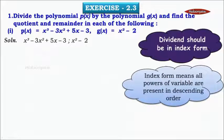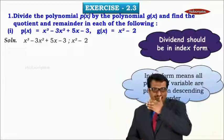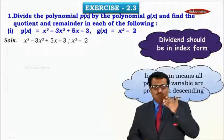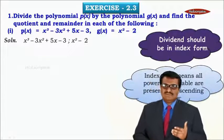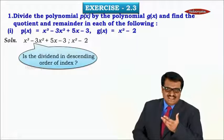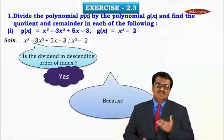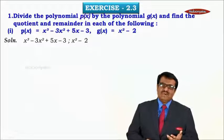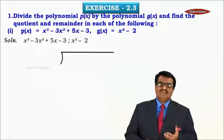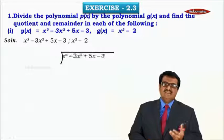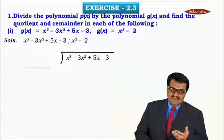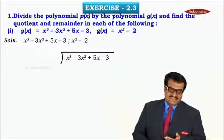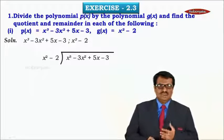Index form means all the powers of the variable are present in descending order — highest power first. In the first polynomial the highest power is 3, so all powers 3, 2, 1, and 0 should be present. This dividend is already in descending order of index, so we will perform the division. Inside we write the dividend x³ minus 3x² plus 5x minus 3, and outside we write the divisor x² minus 2.